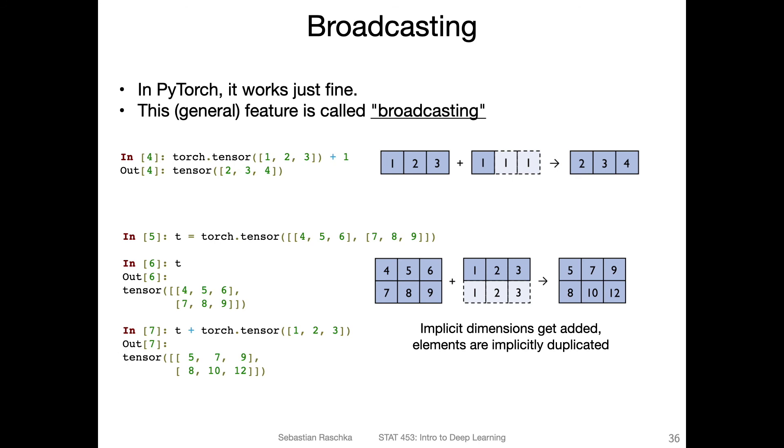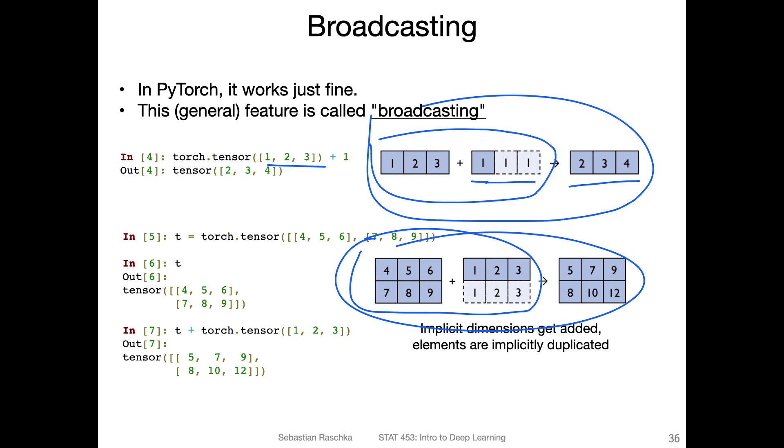Under the hood, PyTorch, and the same thing is also true for NumPy, they will create another dimension implicitly. So you can't see this dimension, but it will just do it internally because it's kind of guessing what you want to do. In this case, under the hood, it's extending this one to a tensor. Then you can add these two tensors together. This is something that happens under the hood. This is called broadcasting, adding this implicit dimension. And the same thing happens here, where we have the matrix that we add to the vector. There will be also this implicit dimension where the values are duplicated. So yeah, this is the concept of broadcasting.